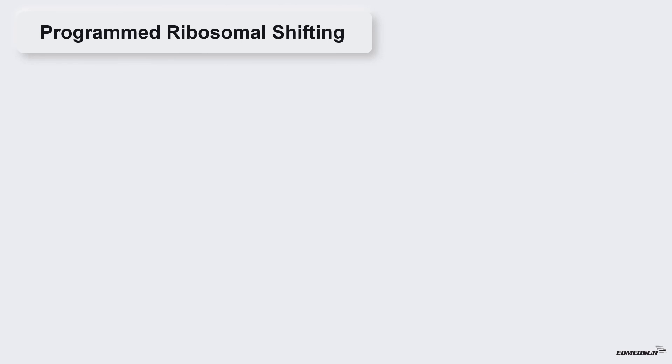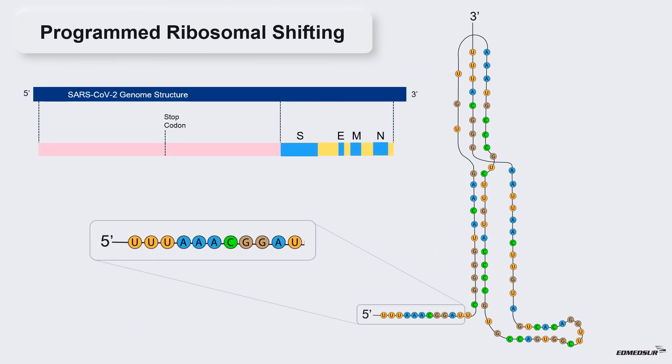Programmed ribosomal shifting. The programmed ribosomal shifting which causes the ribosome to skip the stop codon at the end of ORF1a occurs because of slippery sequence and RNA pseudoknot structure. The stop codon present at the end of ORF1a is UAA. Ribosome has a propensity to occasionally slip back out of frame when it lands on this site. That is why it is known as a slippery sequence.